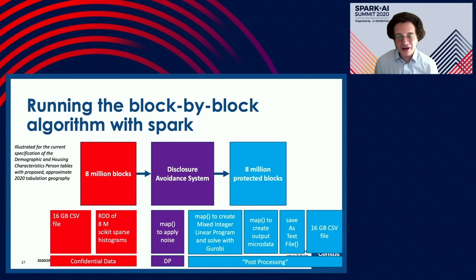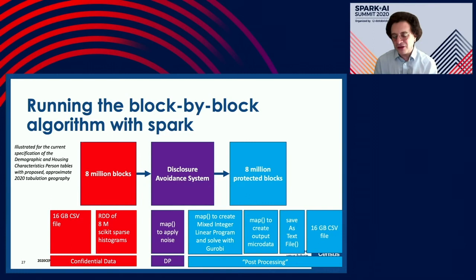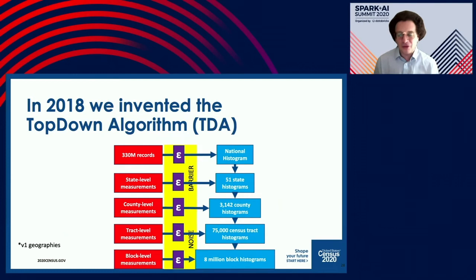That's beginning to sound like something you'd want to do with Spark. We have a 16-gigabyte CSV file, create an RDD with 8 million sparse histograms, use a map operation to apply the noise, then use the Gurobi mixed integer linear program to solve all those histograms to be consistent, map it to create microdata, and save it as a text file. We very clearly distinguish the noise-adding step — the differential privacy protection — from the post-processing done with Gurobi, where most of the work happens.